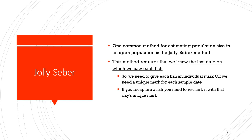This method requires that we know the last date on which we saw each fish, so we need to give each fish an individual mark. That way we can tell on which date we caught each fish. At the very least, we need to give a unique mark to all fish caught on a certain date. Every time you get a recap, you record it — based on the unique tag you can tell when was the last time you caught that fish. You'll need to re-tag it with that day's unique mark. The critical data is: when was the last time we saw this fish.